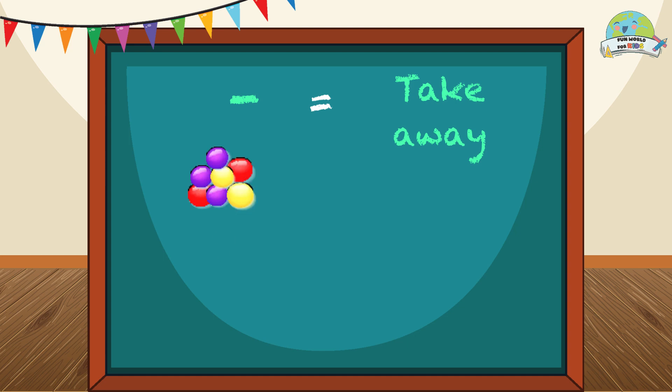Let's practice! If you have seven gums and you eat two, how many gums are left? Five. Great!